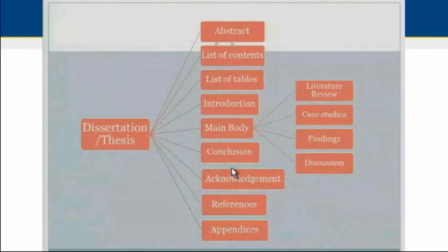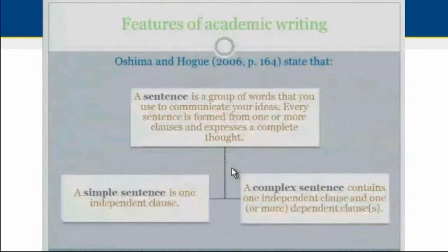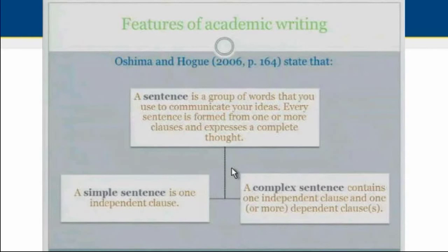Writing academically involves the consideration of different features, such as the use of well-written sentences. A sentence is a group of words that you use to communicate your ideas. Every sentence is formed from one or more clauses and expresses a complete thought. These authors present two types of sentences: a simple sentence, which contains one independent clause, and a complex sentence, which contains one independent clause and one or more dependent clauses.